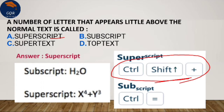The number of letters that appear a little above the normal text is superscript. The rule below the superscript level is subscript. The normal text sits on the baseline. Above the baseline is superscript; below the baseline is subscript. We will write the base of the text to demonstrate.